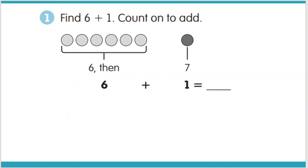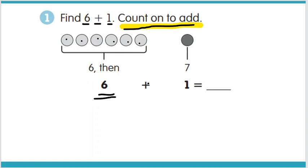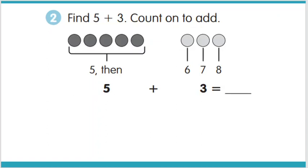Let's work through the first problem. If we encounter a problem that says find 6 plus 1, we can count on to add. We want to first start with that 6 — take the group of 6: 1, 2, 3, 4, 5, 6. So I'm going to put 6 in my mind and start counting at 6. I start with that bigger number, then count on 1 more, which would be 7. So 6 plus 1 equals 7.